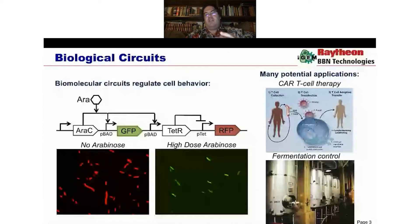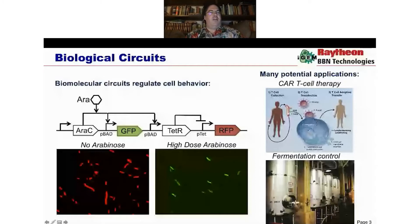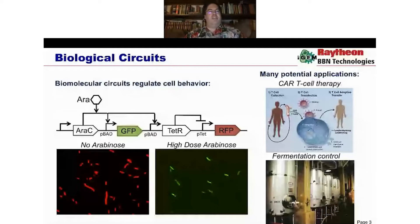So in particular, in the informational world, I often tend to think about this in terms of biological circuits. And here, what we're really thinking about is ways that we can sense, compute upon, and control cellular behavior. And I often think about the simplest possible thing is, over here on the left, this example circuit. I think of this as the hello world of biological information processing, where we're sensing a small molecule, in this case, arabinose.